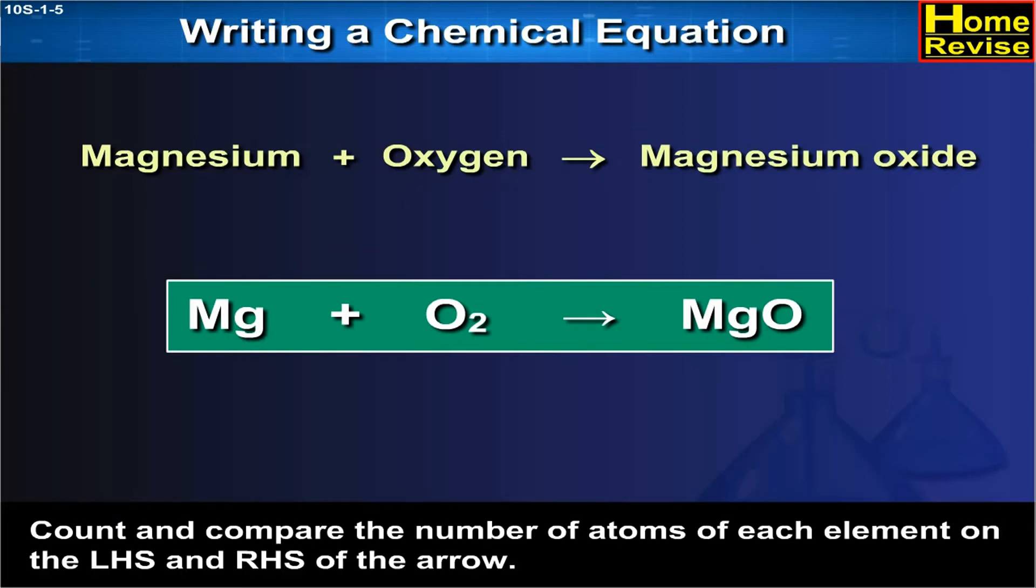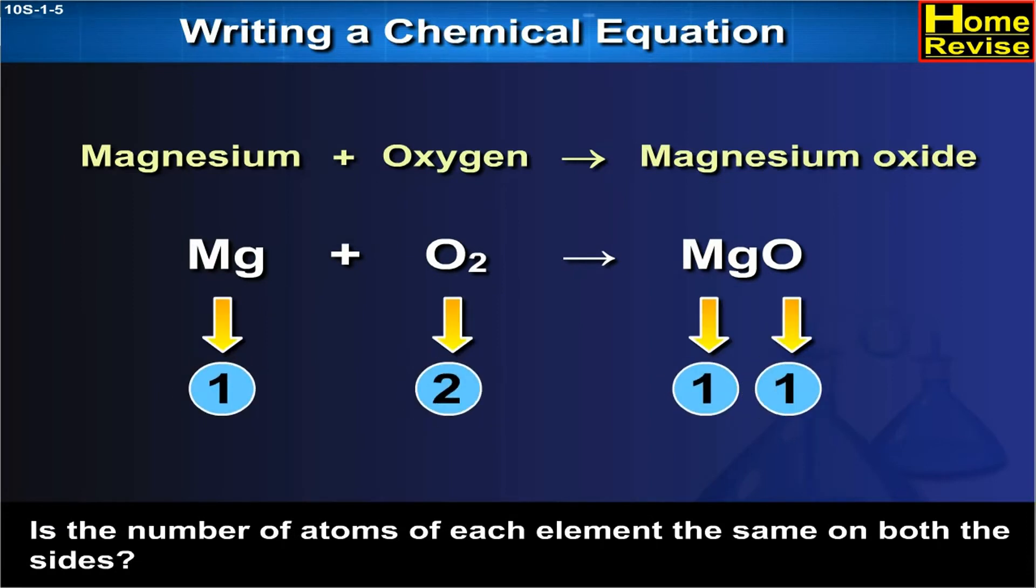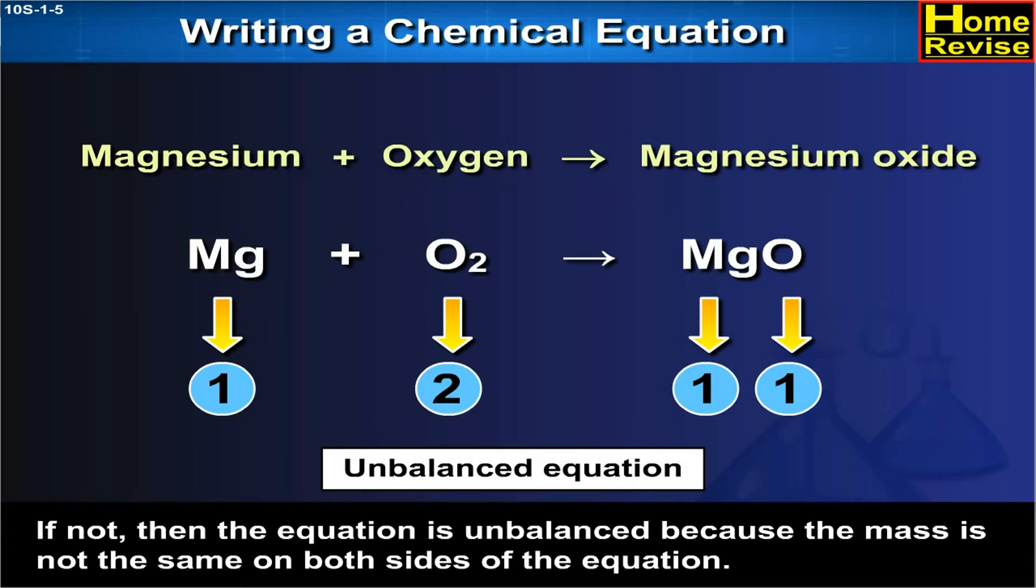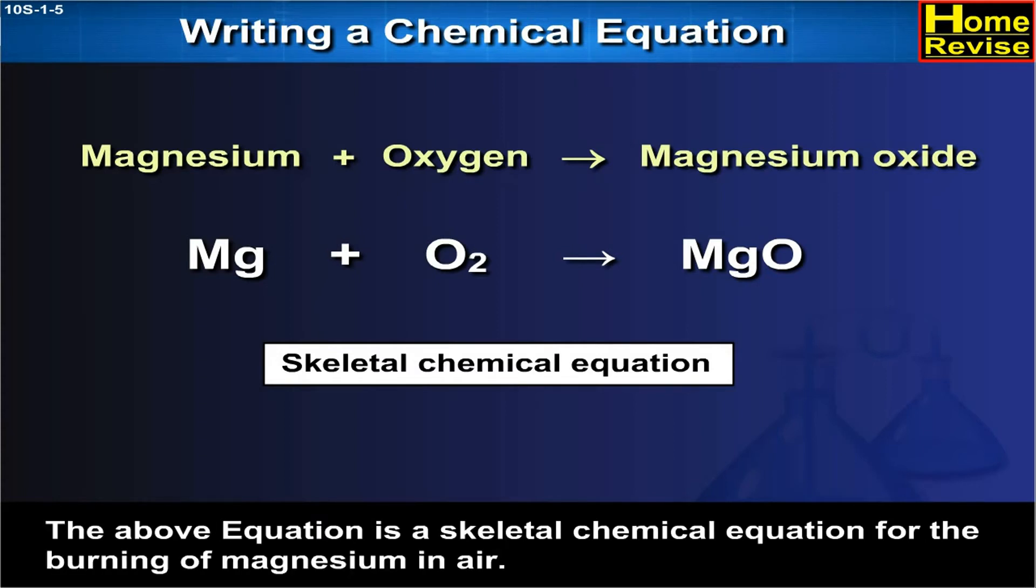Count and compare the number of atoms of each element on the LHS and RHS of the arrow. Is the number of atoms of each element the same on both sides? If not, then the equation is unbalanced because the mass is not the same on both sides of the equation. Such a chemical equation is a skeletal chemical equation for a reaction. The above equation is a skeletal chemical equation for the burning of magnesium in air.